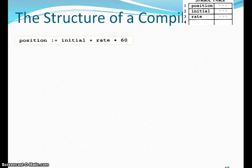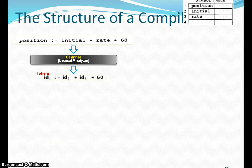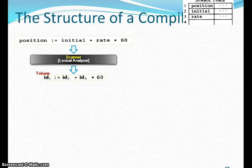For example, with a diagram, if we have a statement like position = initial + rate * 60, let's see how exactly each phase of the compiler processes it. Starting with the lexical analysis phase, after the lexical analyzer runs, it generates tokens like: position is denoted as id1, initial as id2, rate as id3, and 60. This is what the lexical analyzer — the scanner — produces.